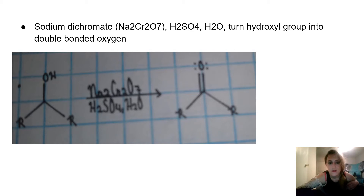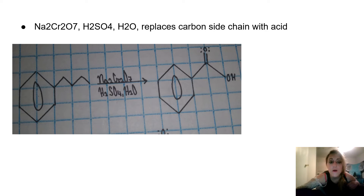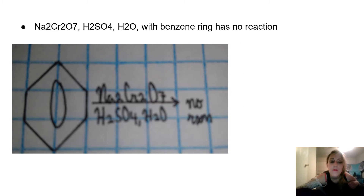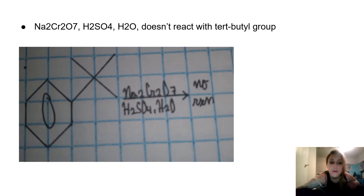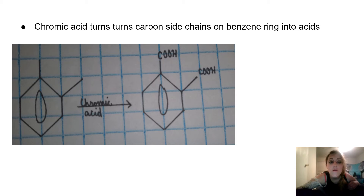Sodium dichromate and sulfuric acid in water turns a hydroxyl group into a double-bonded oxygen (ketone/aldehyde). Sodium dichromate and sulfuric acid in water replaces a carbon side chain with a carboxylic acid functional group. Sodium dichromate and sulfuric acid in water with a benzene ring has no reaction, and also does not react with a tert-butyl group. Chromic acid turns carbon side chains on a benzene ring into carboxylic acid functional groups.